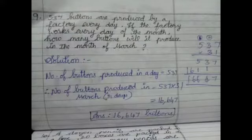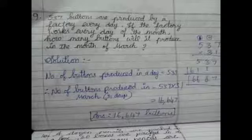9th question. 537 buttons are produced by a factory every day. If the factory works every day of the month, how many buttons will it produce in a month of March? We know that March month has 31 days. In one day they produce 537 buttons. Therefore the number of buttons produced in March month, so we can multiply 537 by 31 days.